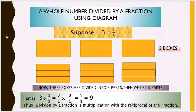Now, a whole number divided by a fraction using a diagram. We can divide a whole number by a fraction by using a diagram. Suppose 3 divided by 1 by 3 — here 3 is the whole number and 1 by 3 is the fraction. So we are taking 3 whole boxes.